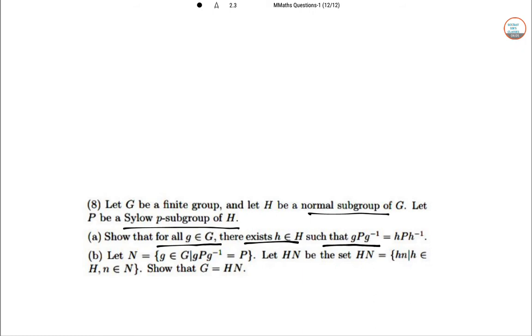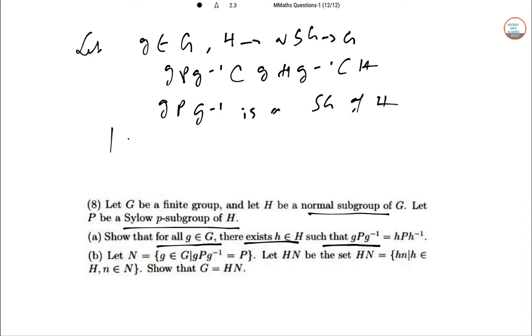Let g∈G, and H is a normal subgroup of G. Then gPg⁻¹ is a subgroup of H. But |gPg⁻¹|=|P|, so gPg⁻¹ is a Sylow p-subgroup of H.